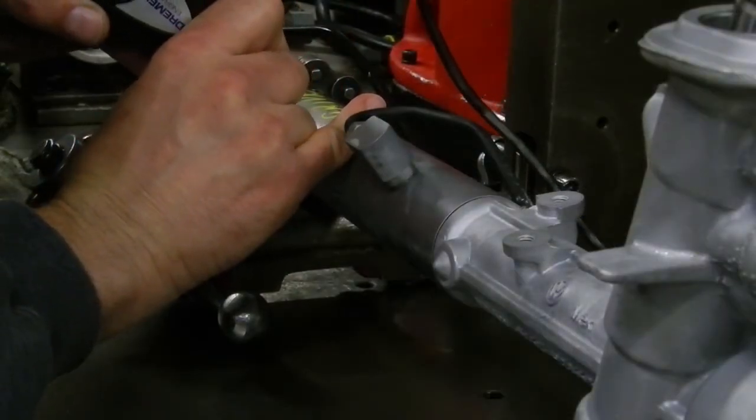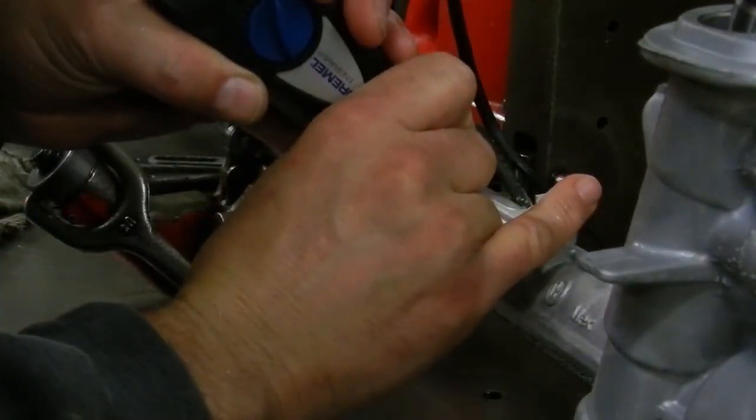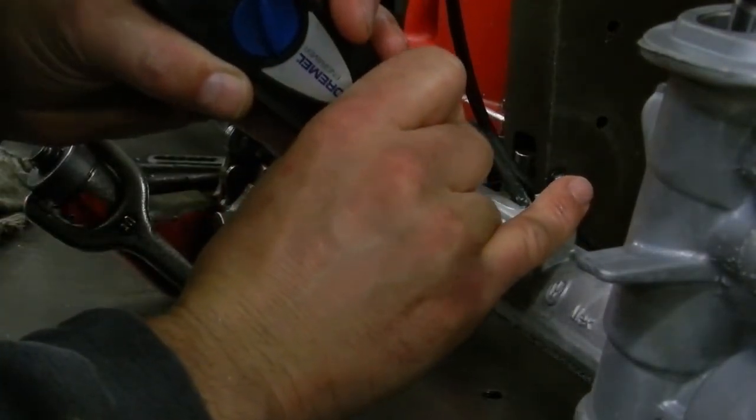Once the unit passes all tests, as determined by the computer, a serial number and the part number are engraved in the housing, with all the test results stored in a computer database for future reference.